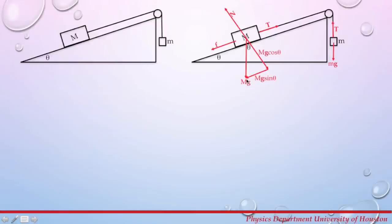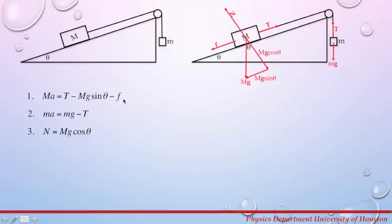Now let's write the Newton's second law equations. Remember that mass times acceleration equals the sum of all forces on the object. Because mass M moves up the incline, that direction is positive; the falling mass falls downward, so that direction is positive. For mass M: tension is positive, while mg sine theta and the friction force oppose the motion, so they are negative.